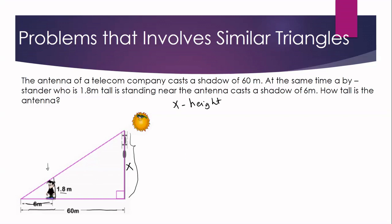Why is it a similar triangle? Because we have a right angle here and a right angle there — so we have one pair of congruent angles. Another congruent angle is this angle, which is the common angle of the two triangles. We have two triangles: the smaller one and the whole figure. This is their common angle, so by the reflexive property, we have one congruent angle (the common angle) and the other is the right angle. By the AA Similarity Theorem, we can say that the triangles are similar.